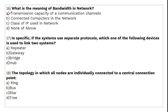If a system uses separate protocols, which device is used to link two such systems? A gateway can link two systems that use different protocols. Gateway joins different networks such as LAN and WAN, connecting networks that use different protocols.